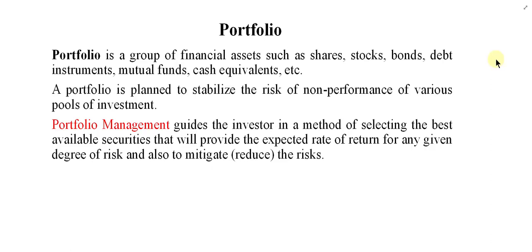Instead of investing the whole capital in a single security, you may invest in two, three, four and so on. Partly in company A, partly in company B, partly in C, and partly in D. Or instead of investing only in shares, you may invest in bonds, debt instruments, mutual funds, and cash equivalents deposited in banks. Making a combination of different securities or different financial assets for the purpose of investment is called a portfolio.